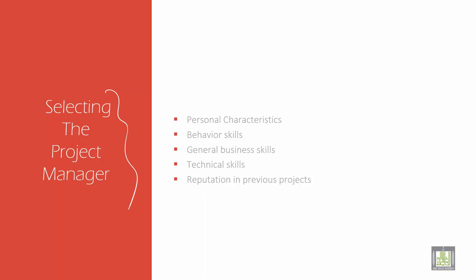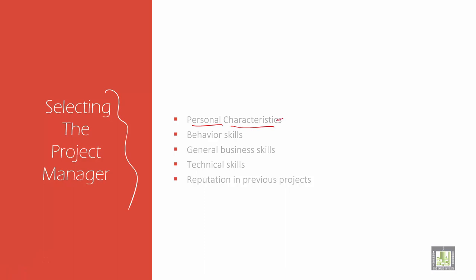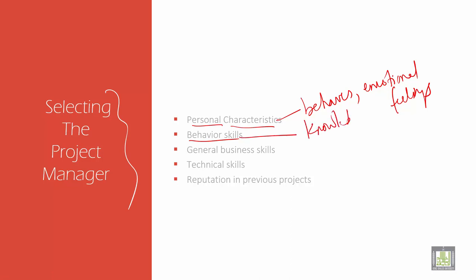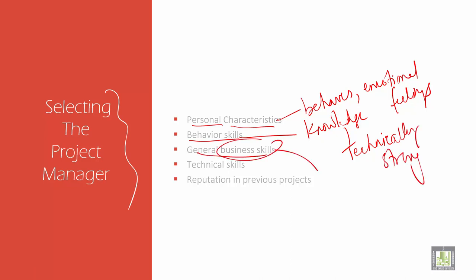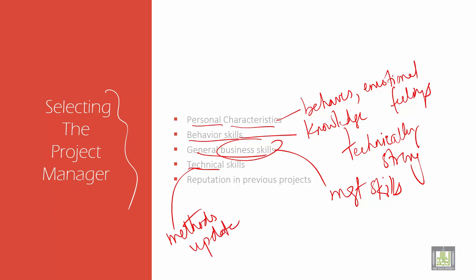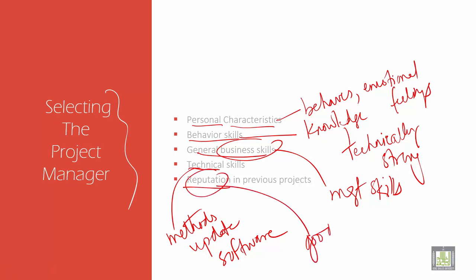The project manager has personal characteristics in how he behaves and what he does — personal characters, emotional feelings, etc. He needs behavioral skills and good knowledge, and must be technically strong. General business skills include management skills and business skills. Technical skills involve new methodologies, new methods, updated software, etc. Also important is his reputation from previous projects — a good name and experience from prior work.